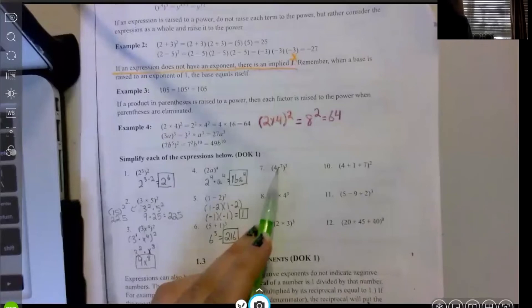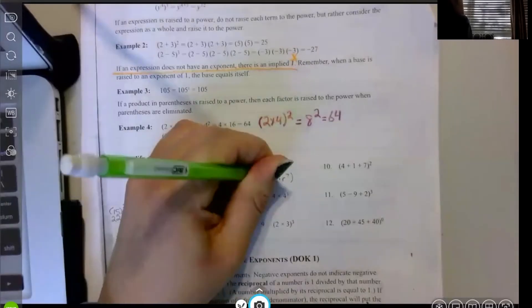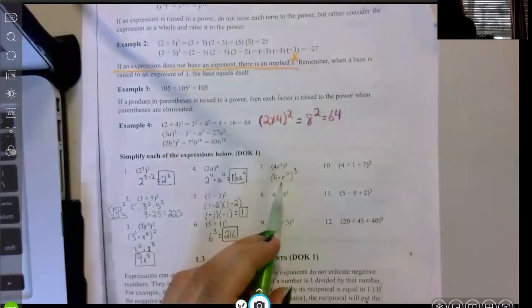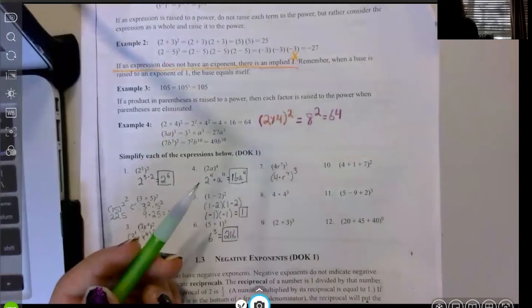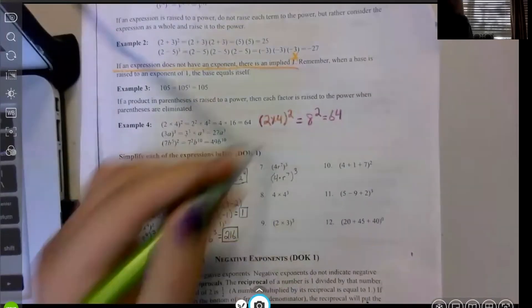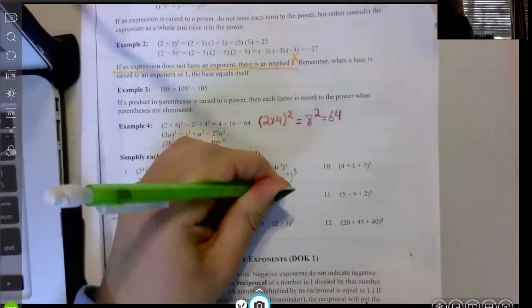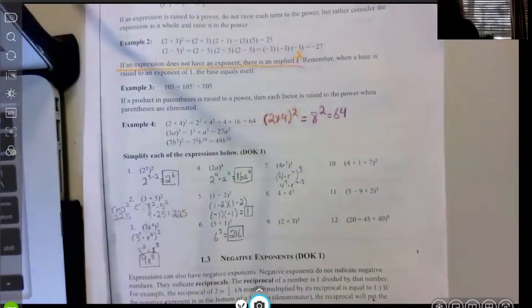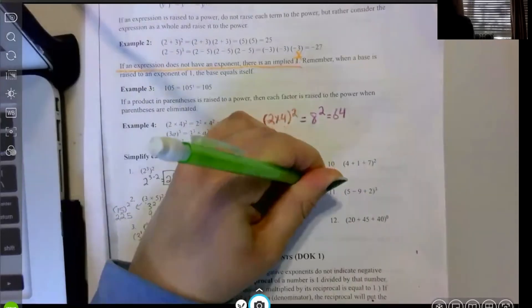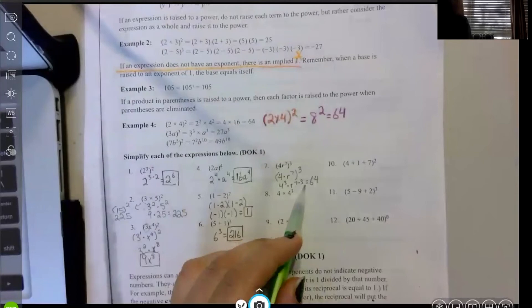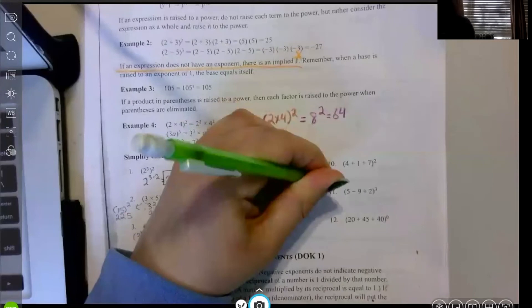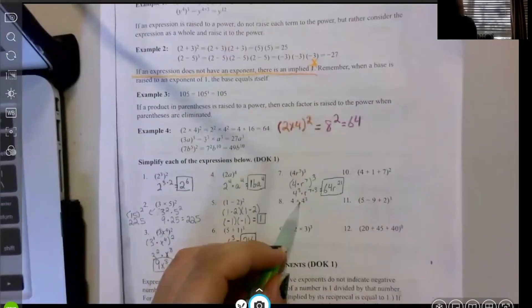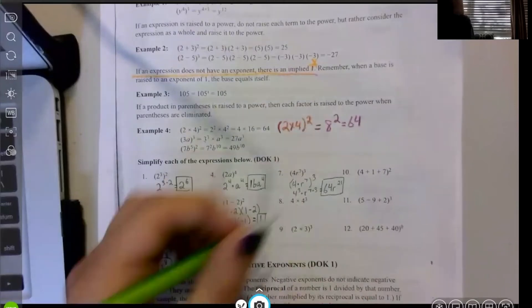For example seven, we have this entire expression cubed, so I raise each of the terms to the third power. They're separated to show they're being multiplied, which we already know from the coefficient in front of the variable. Four to the third we write as four cubed, and then r to the seven times three gives r to the 21st. Four cubed is 64, so the answer is 64r to the 21st.